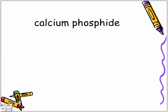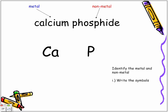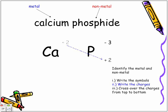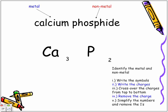Our last example is calcium phosphide. Calcium is the metal; phosphide is the non-metal. Write the symbols: Ca and P. Step two, write the charges: plus 2 and minus 3. Step three, cross over the charges from top to bottom. Step four, remove the charges. Finally, the last step: simplify the numbers and remove the ones. Three to two is already in lowest terms — we cannot reduce it. There are no ones to remove, so the formula as is is Ca₃P₂.